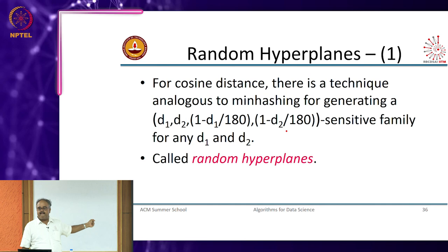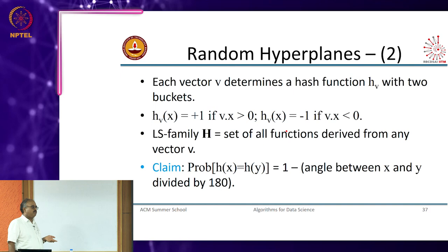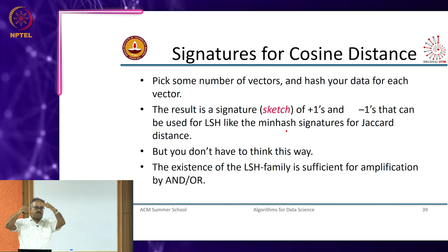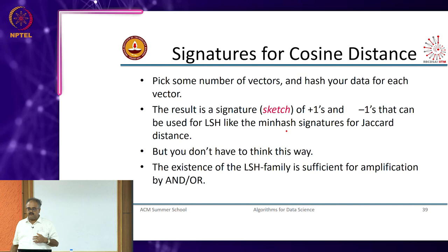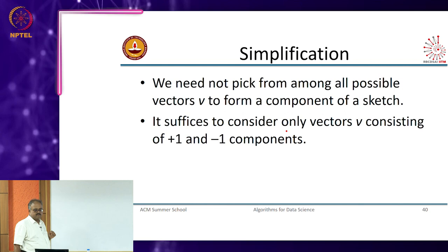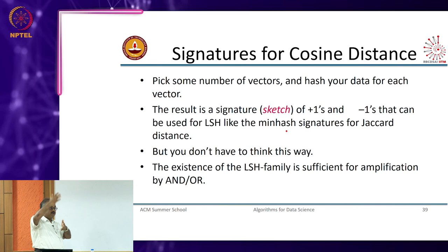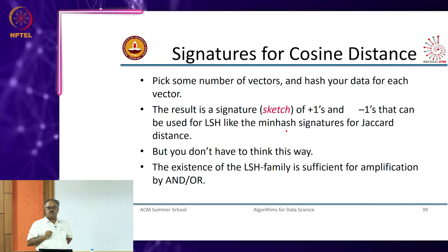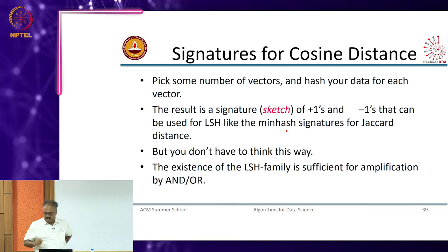That is essentially a sketch. Your hash function becomes a sequence of plus 1s and minus 1s: plus 1 if the signs agree, minus 1 if the signs do not agree on the projection to the hyperplane. If two vectors agree on the projection on many different random hyperplanes then with high probability they are similar. If they do not agree on a good fraction of random hyperplane projections then they are likely to be dissimilar.